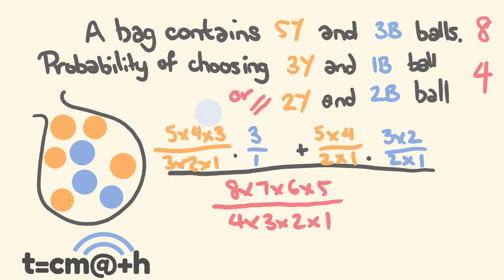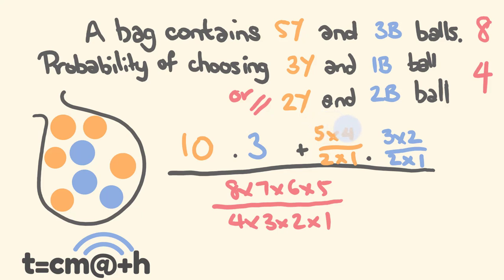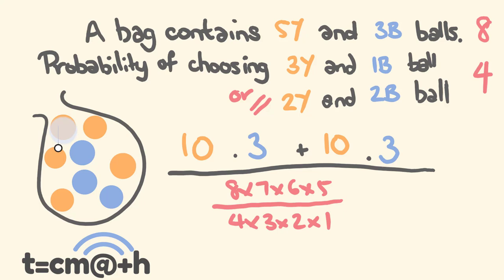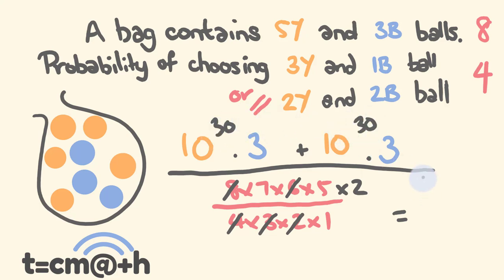Let's solve this. 5×4×3 = 60, divided by 6 = 10. Times 3 over 1 = 3. So first term: 10×3 = 30. Then 5×4 = 20, divided by 2 = 10. Times 3×2÷2 = 3. So second term: 10×3 = 30. Numerator: 30+30 = 60. For the denominator, doing some cancelling: 4×2 = 8, and using 3 and 6, so we multiply by 2: 7×5×2 = 70.